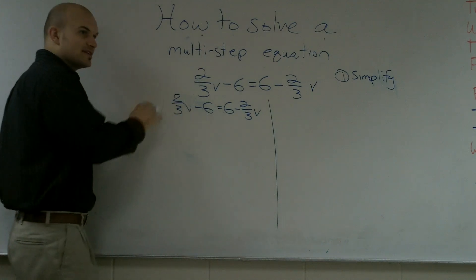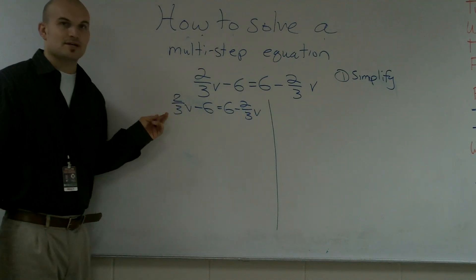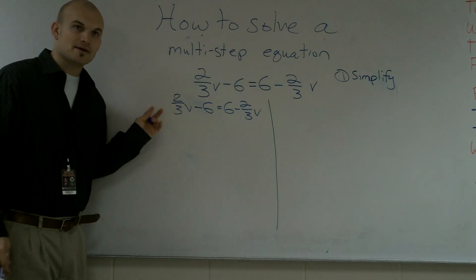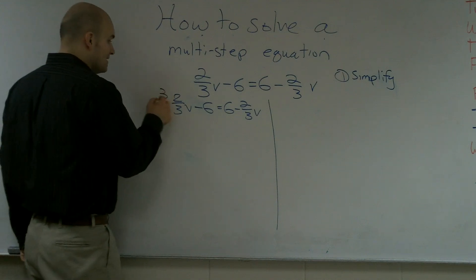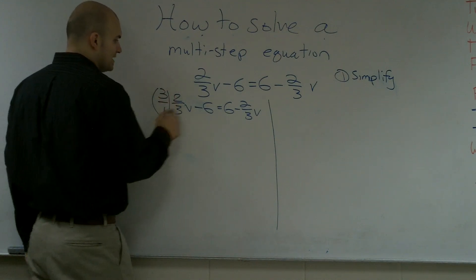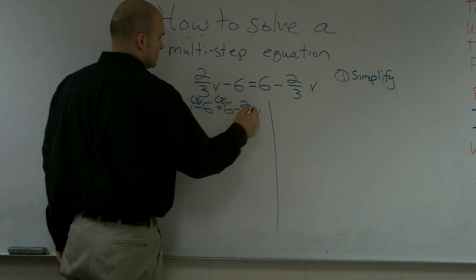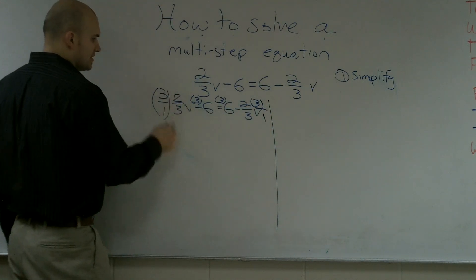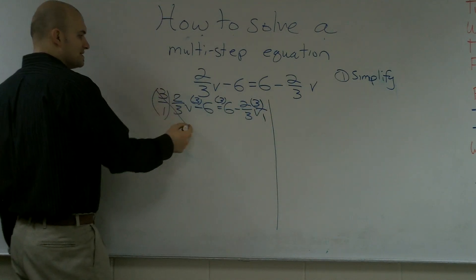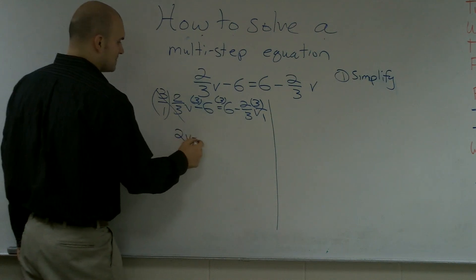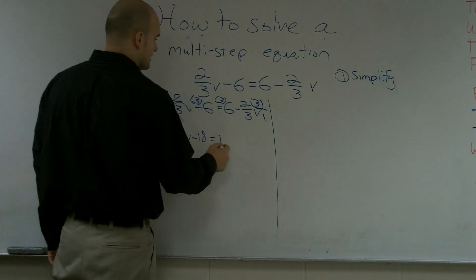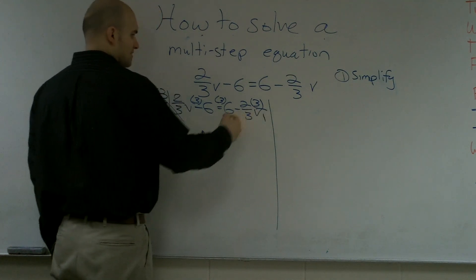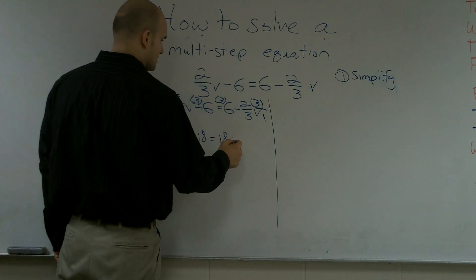So, what's on the bottom of this, what's the denominator for my fraction? What's my denominator? Three. Three. I'm going to multiply by three times everything. I'm going to put it as a fraction because I'm multiplying across. Therefore, I get these threes cancel out, so I'm left with 2V minus 18 equals 18, and those cancel out, minus 2V.